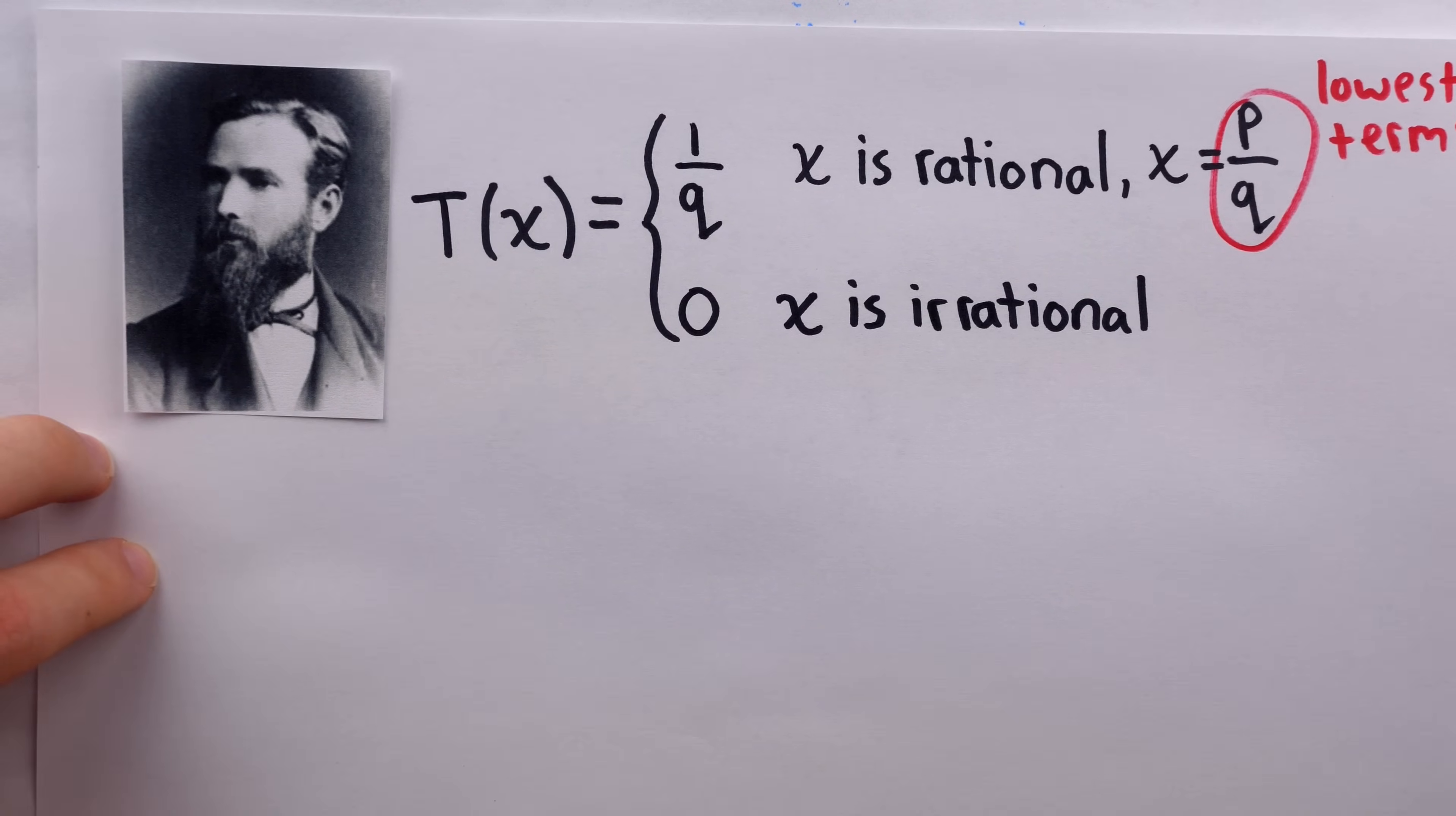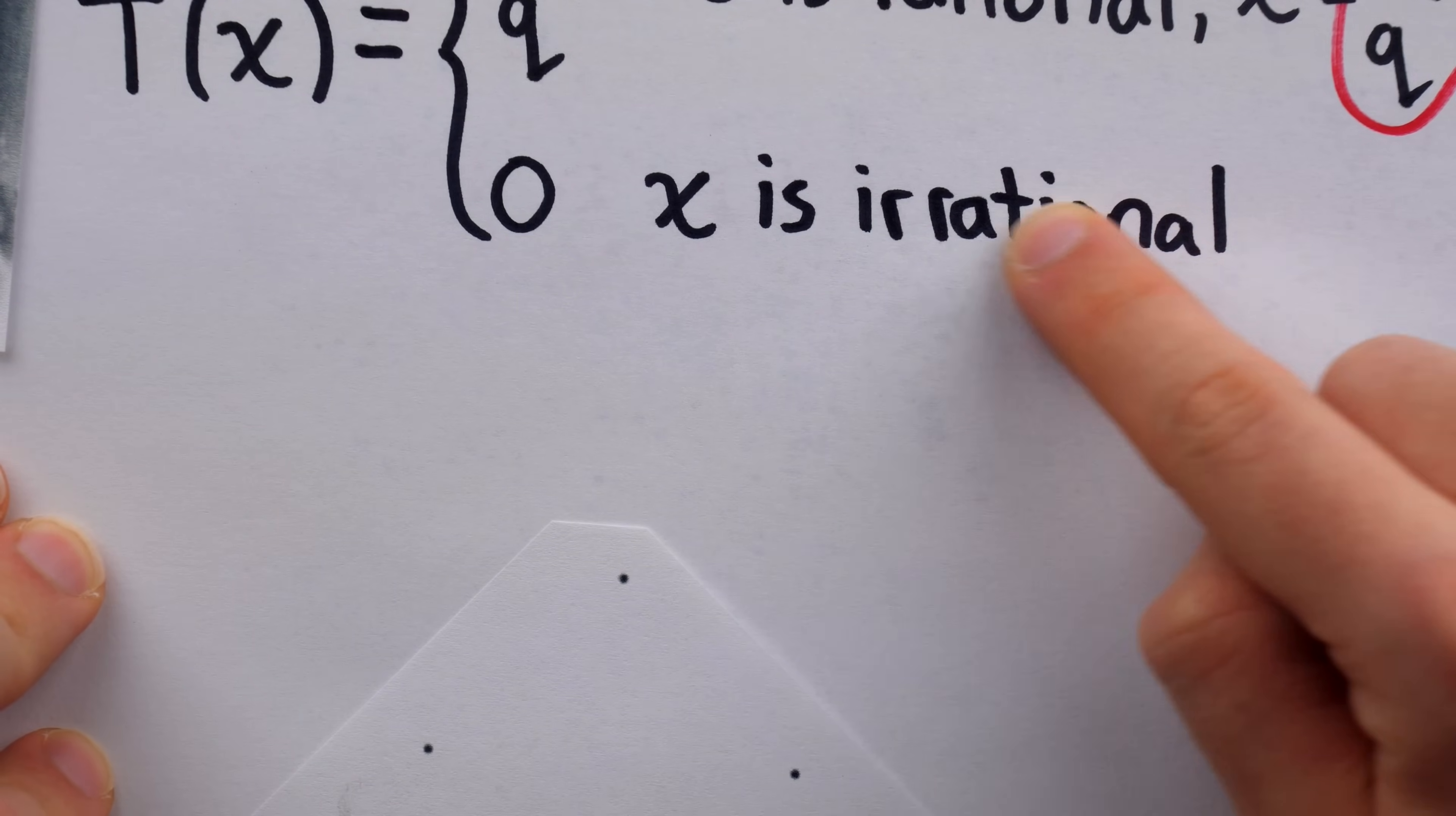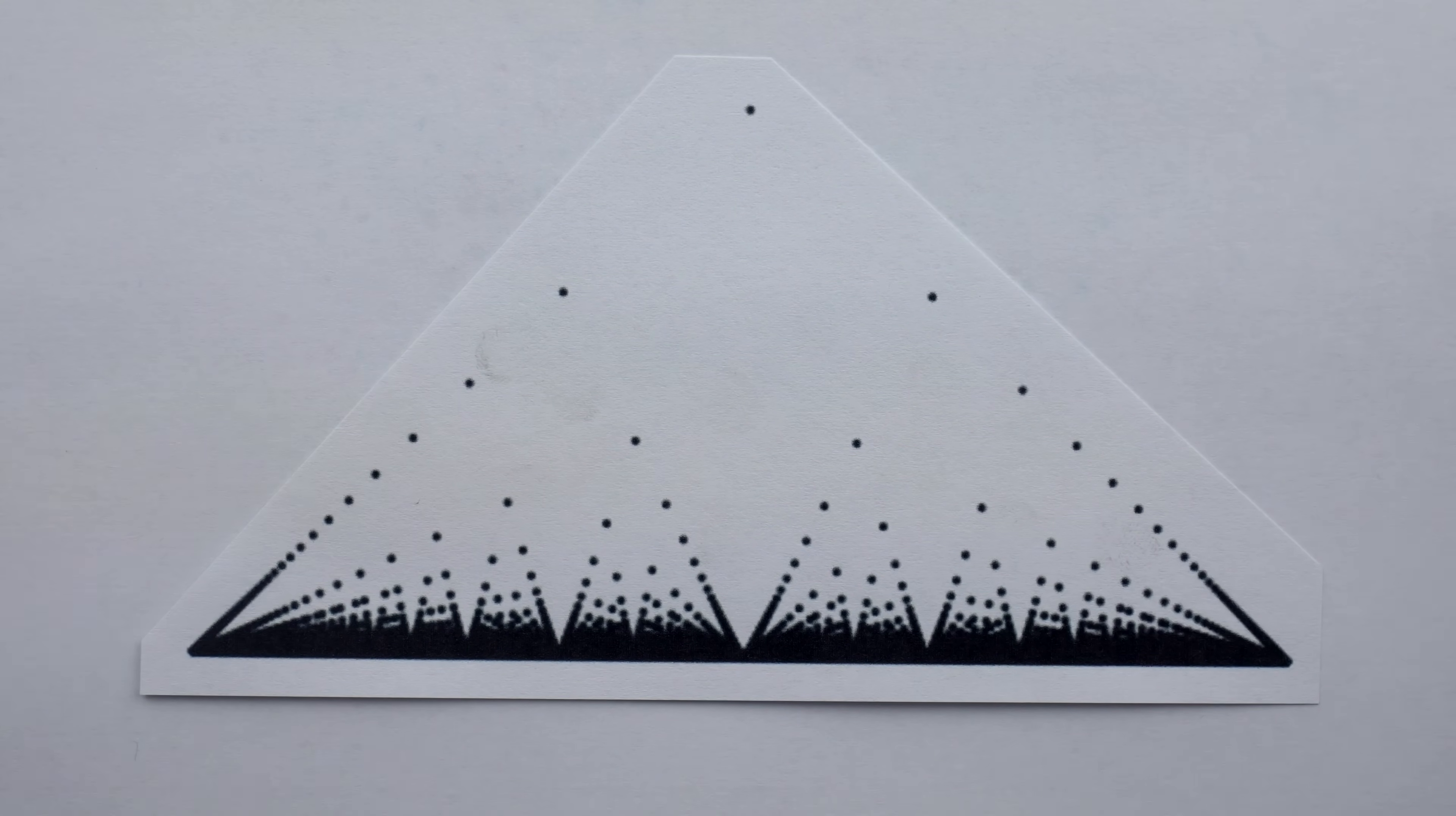Now if you graph this function, it has a very distinct appearance. All of the rational inputs create these interesting sort of triangle, diagonal patterns. This point at the top is x equals one-half, where the function outputs one-half. But then, due to the density of irrational numbers on the real number line, you also get this basically solid line on y equals zero.